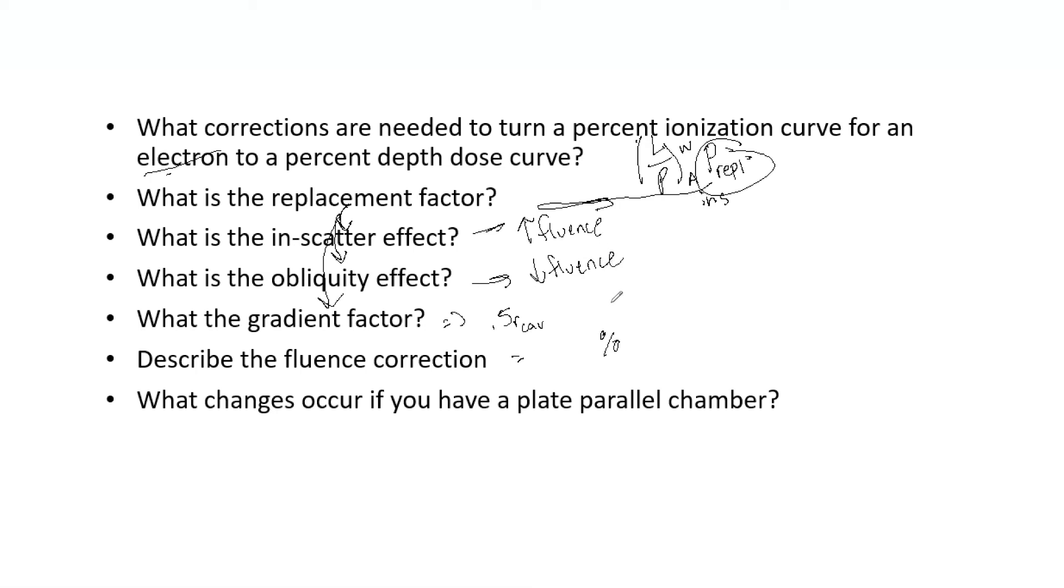And then finally, what if you have a parallel plate chamber? Depending on if you have low energy electrons, you are supposed to use the parallel plate chamber. The P fluence and the P gradient can be ignored for parallel plate. However, your L over rho, that needs to be applied. That one you do in fact need regardless of what chamber you are using. Also an importance is that your effective point of measurement is on the front surface of your chamber.